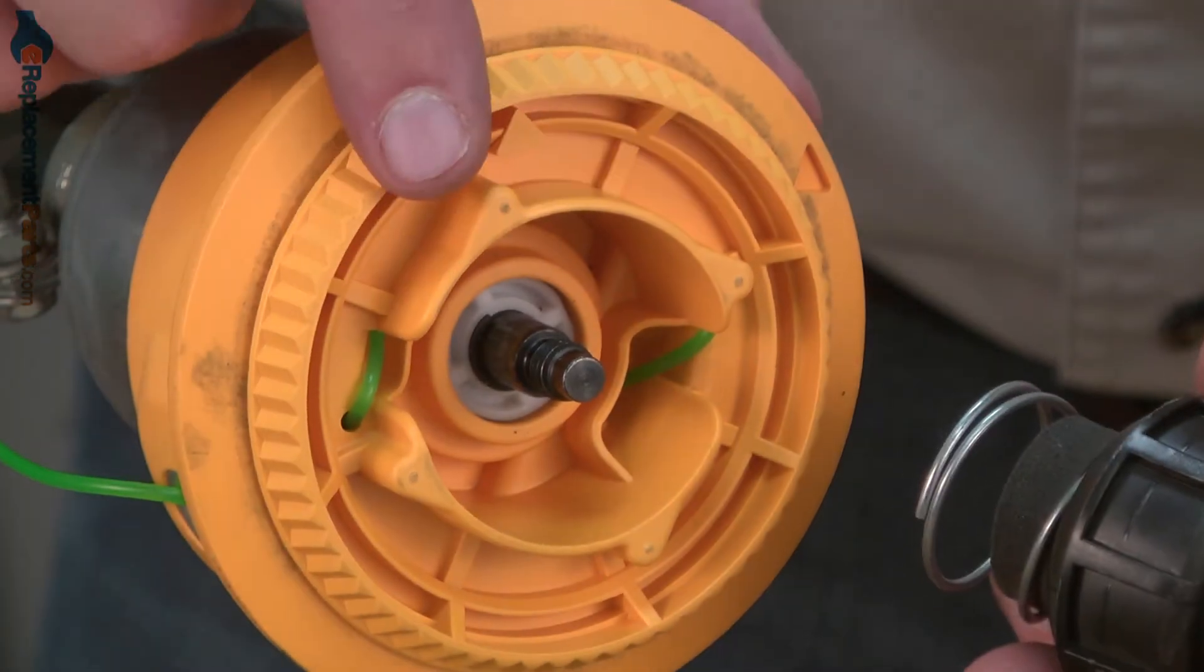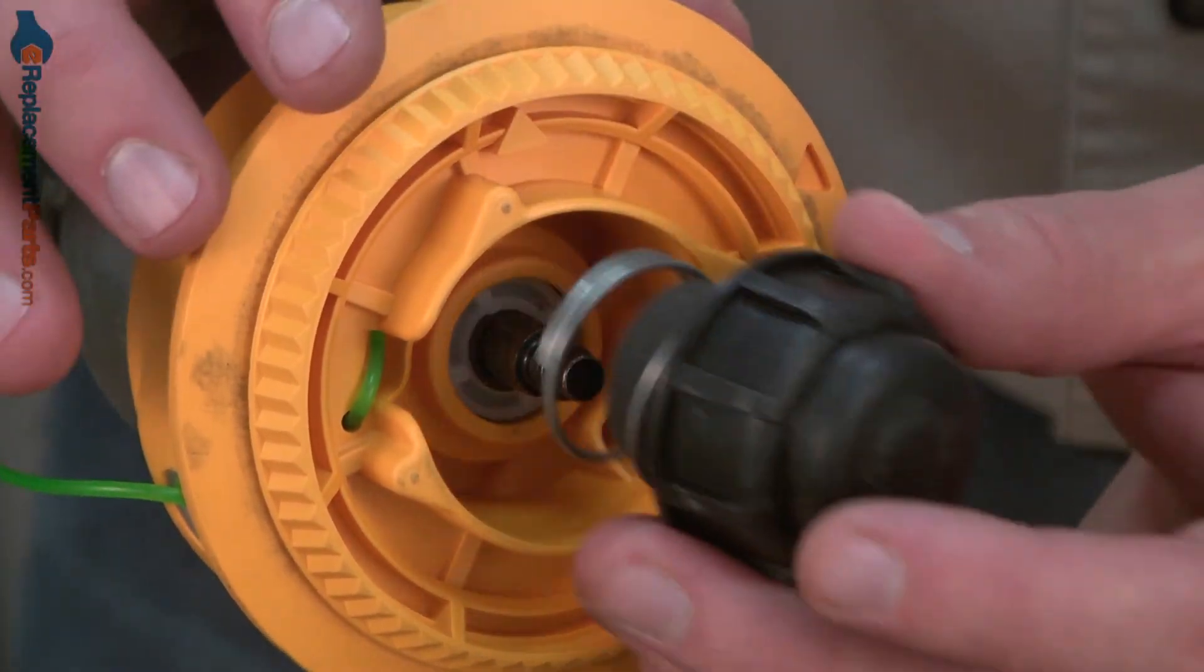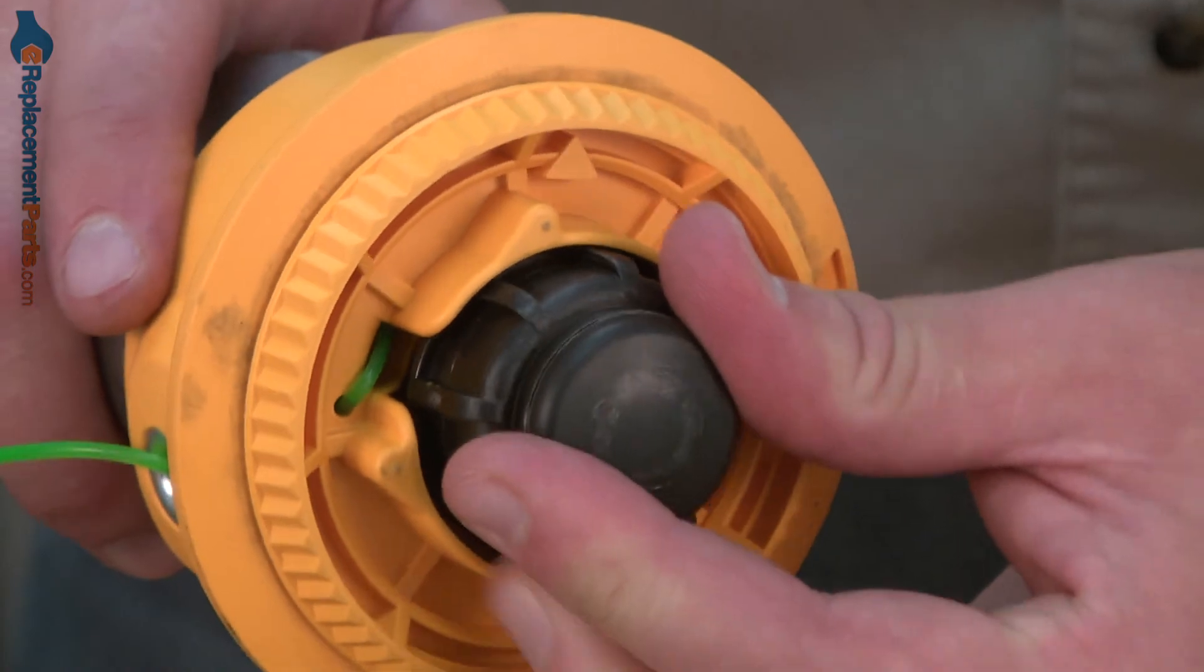And now secure the spool with the bump head knob. Because of the spring on the knob you'll need to press in as you secure it.